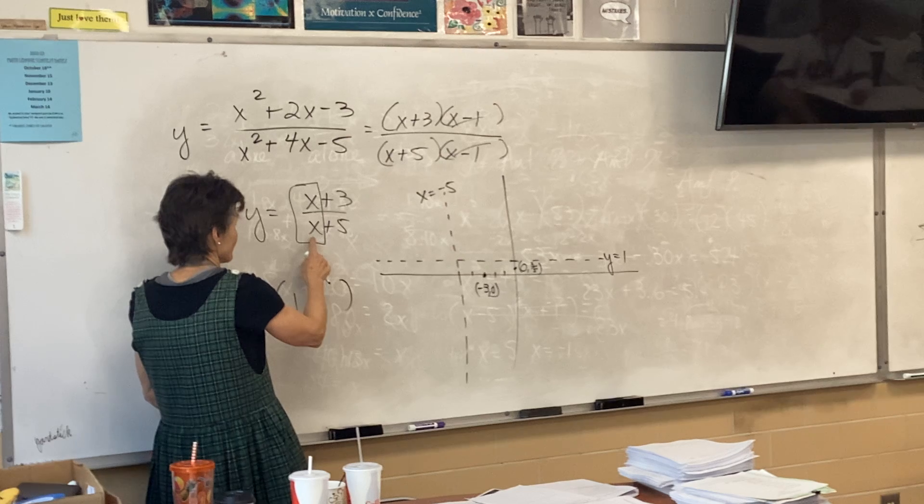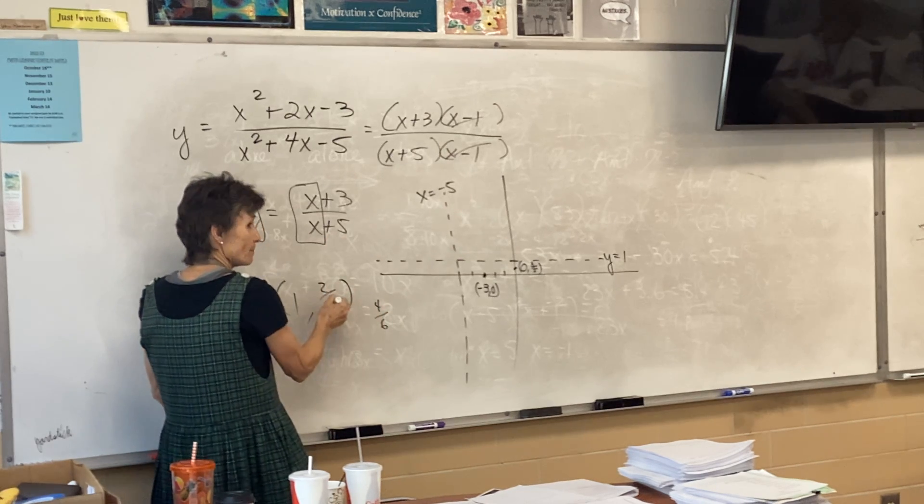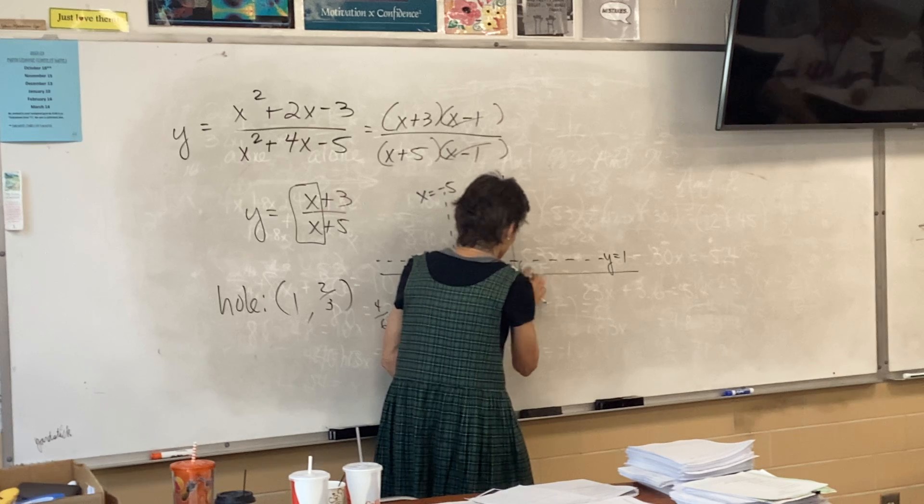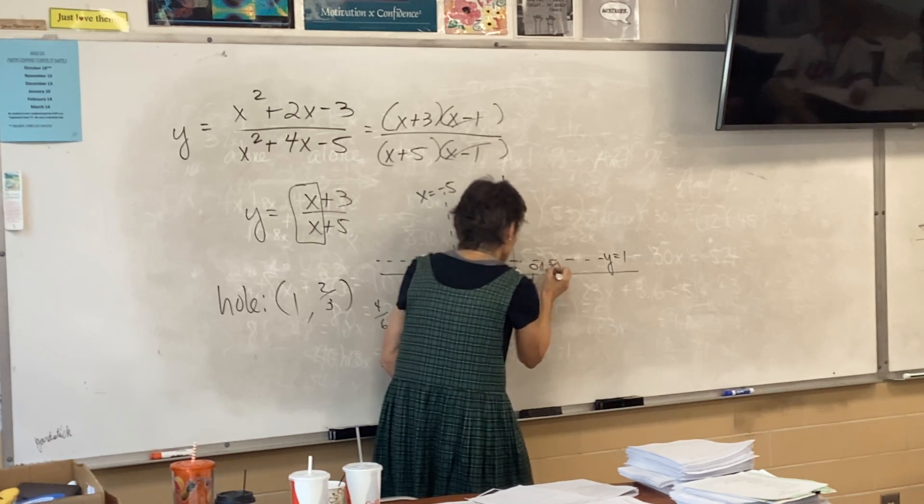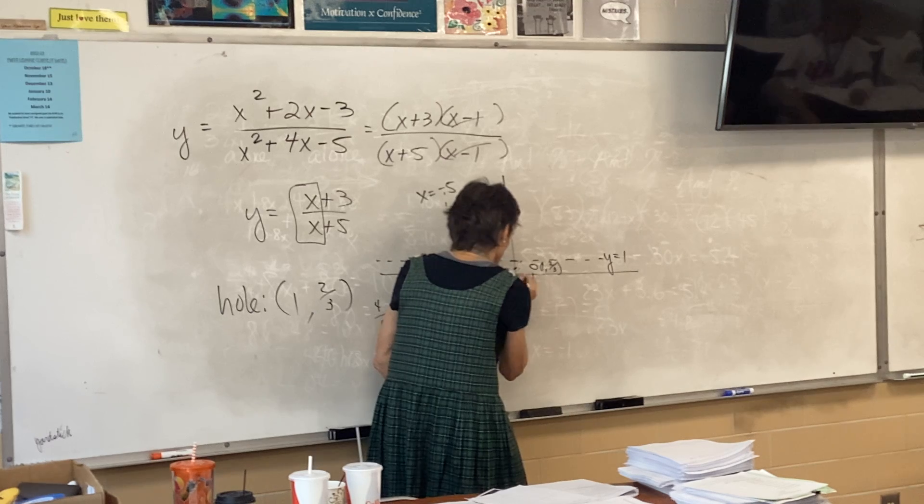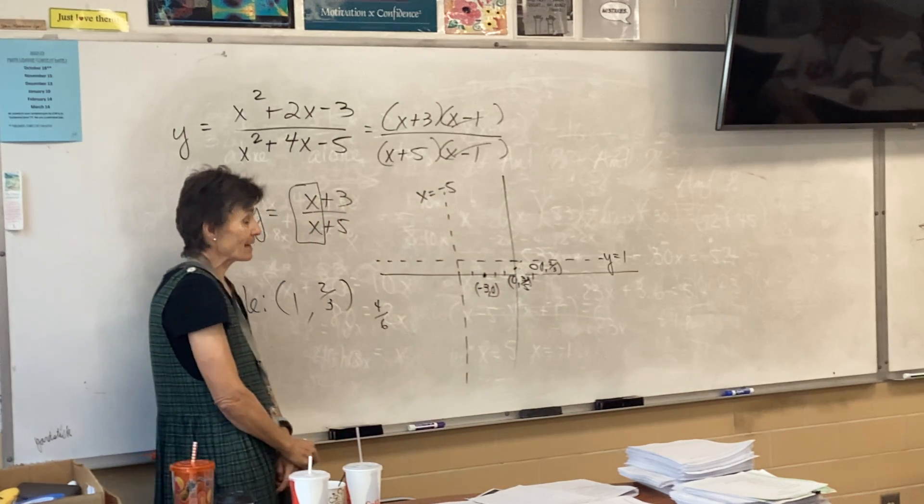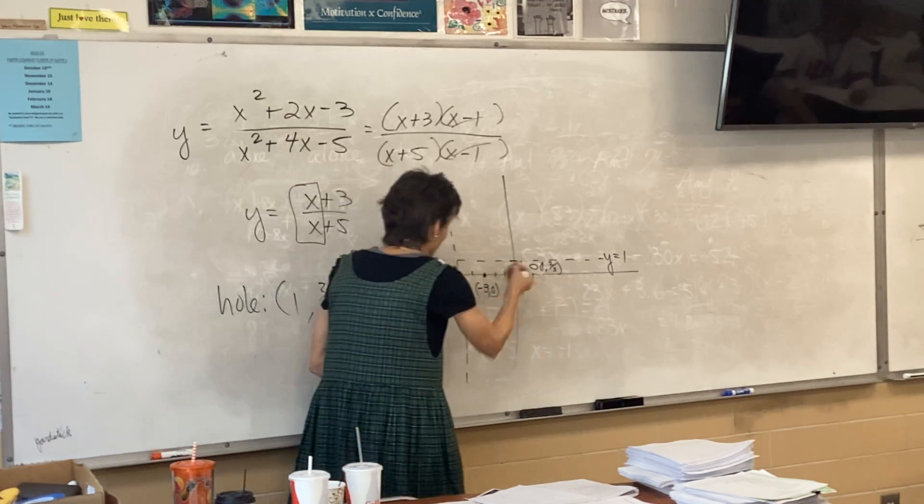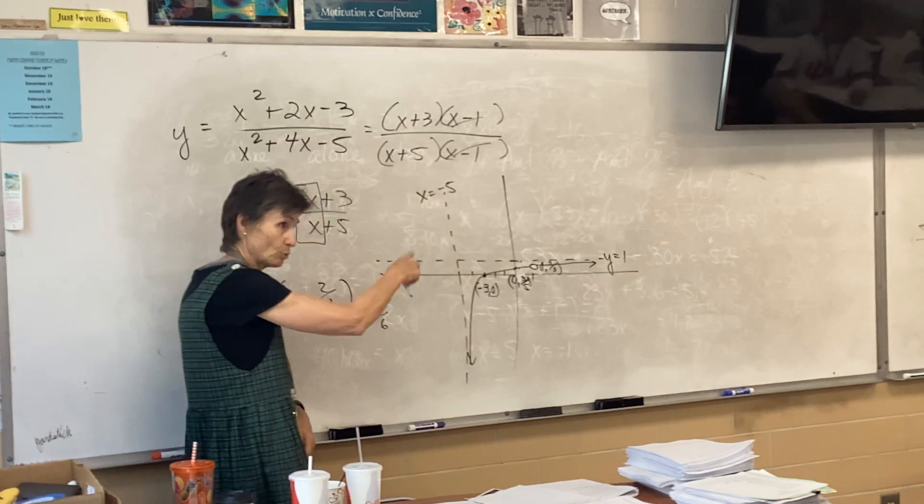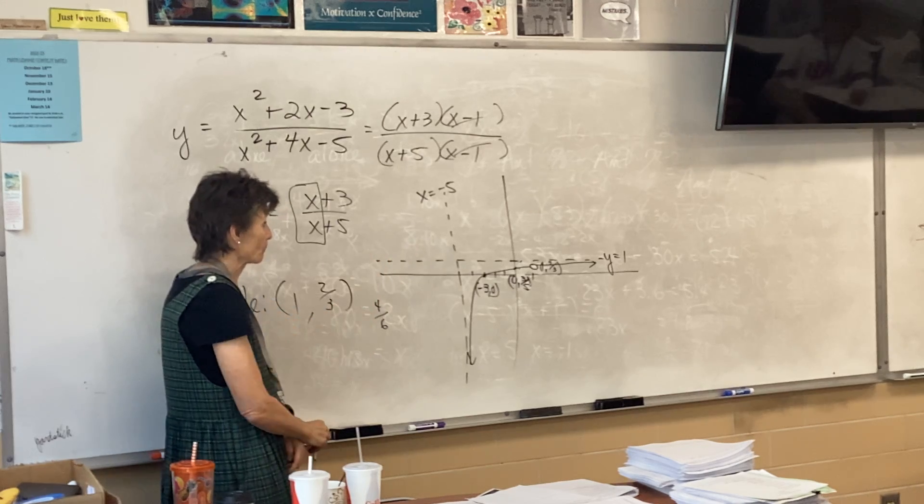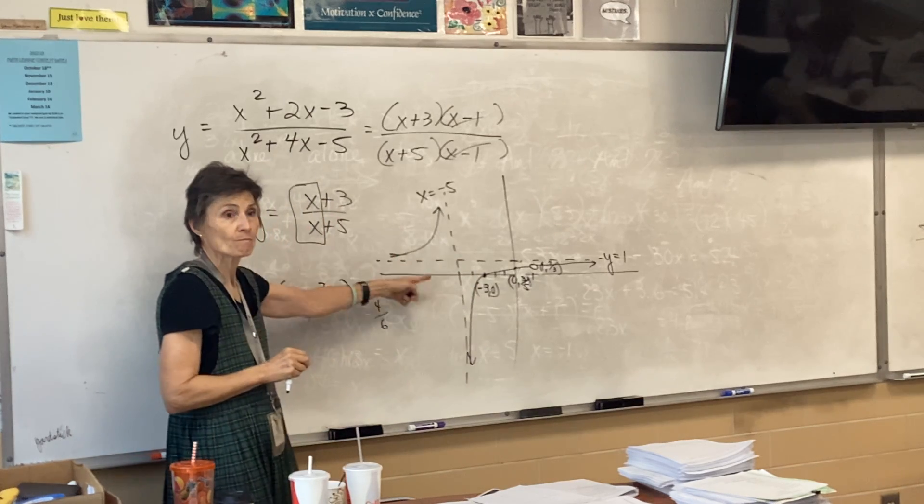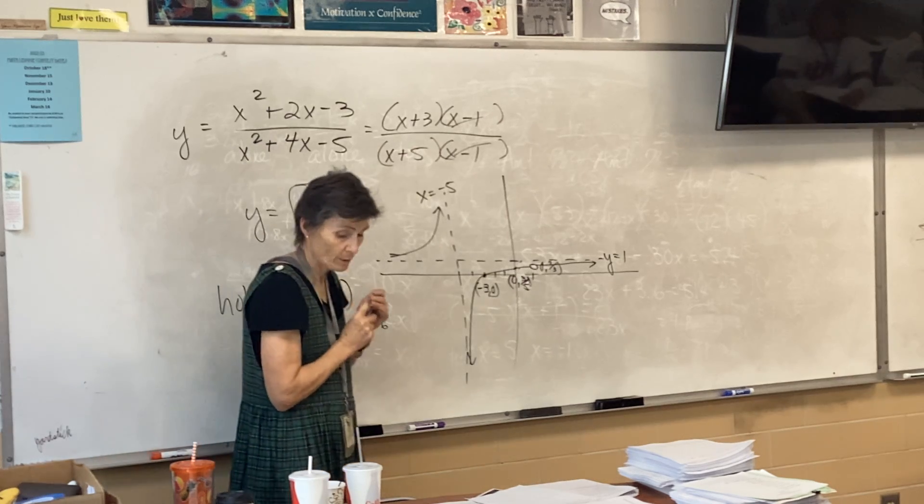Plug in one, we get four over six which is two thirds. So I have a hole at one comma two thirds. Now we just sketch it in. This side looks pretty easy because I got these points right here. The curve has to go through whatever you plotted. Who else has something homework or quiz or just something?